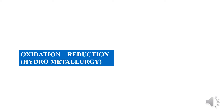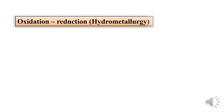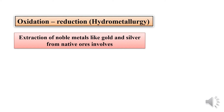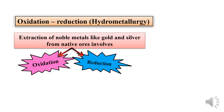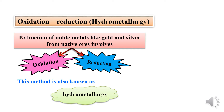Welcome back to chapter metallurgy. In the previous module we were studying about the extraction of copper as well as iron. Now we are going to study about the extraction of gold and silver using reagents like cyanide and zinc. This process involves both oxidation and reduction. Gold and silver are considered noble metals, extracted from their native ores. This method is also known as hydrometallurgy since we are dealing with aqueous solutions.